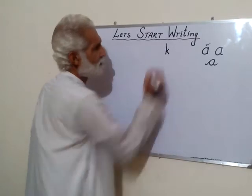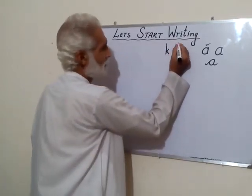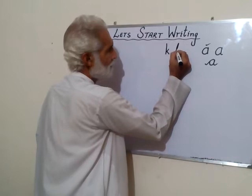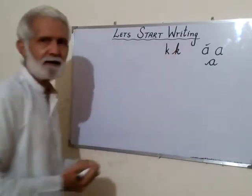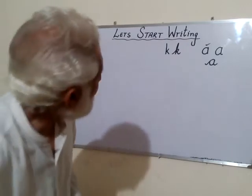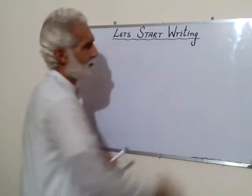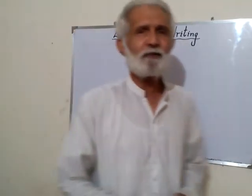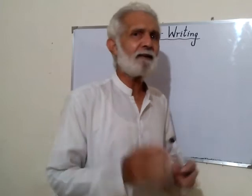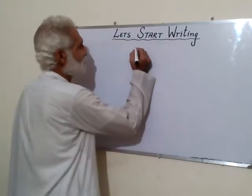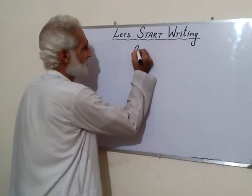Similarly, for small K: this is what simple small K looks like, and when joining I said go up, come down and make a small arm. So today when I say let's start writing, it means let's start joining — let's start cursive. In simple writing we say A.